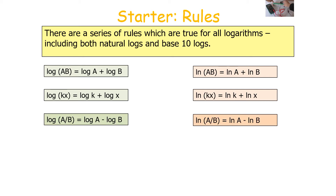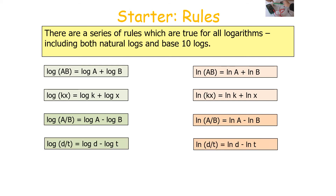The second rule is that log(A/B) equals log A minus log B. When you have a term with a division, you can separate them by subtracting one log from the other. For example, log(D/T) equals log D minus log T, and natural log(D/T) equals LN D minus LN T.